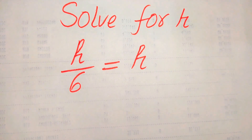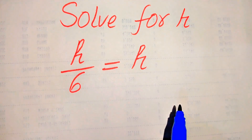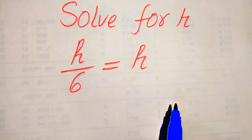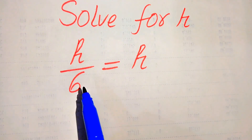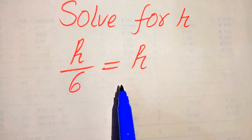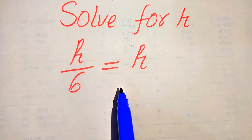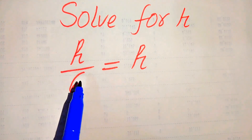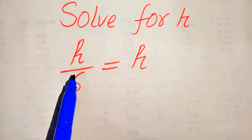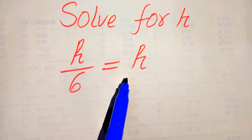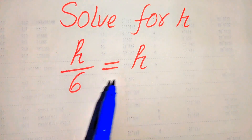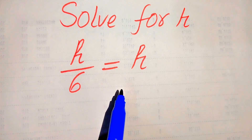Hello everyone. How to solve this problem for the values of h if we have h over 6 equals h. You see here the exponent of h is 1, which means that this is a linear equation.